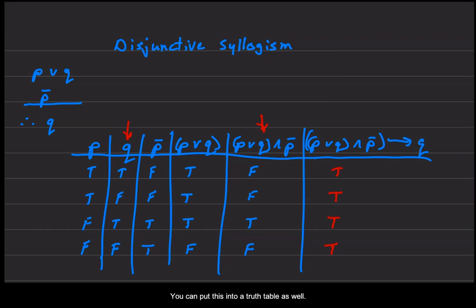And we can put this into a truth table as well. Put P and Q out here. True, true, false, false. True, false, true, false.